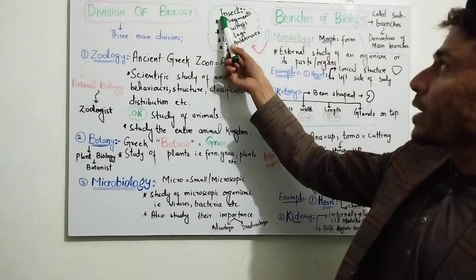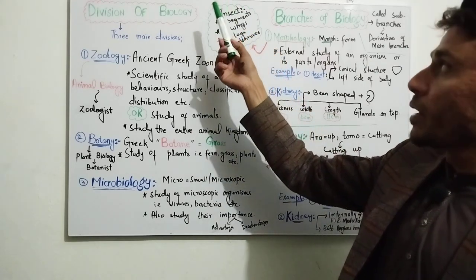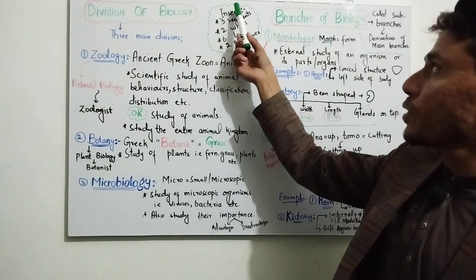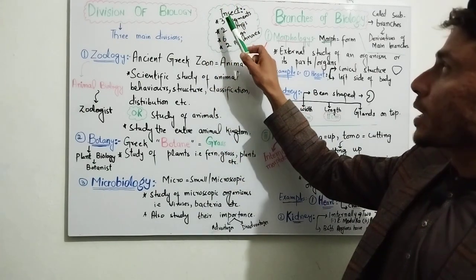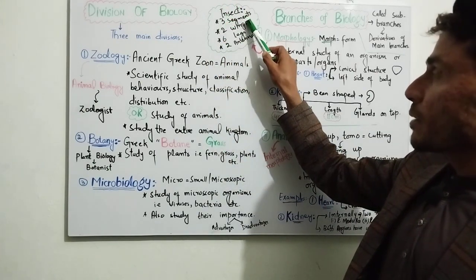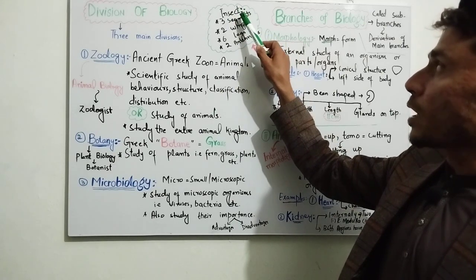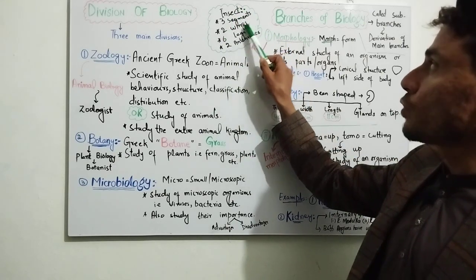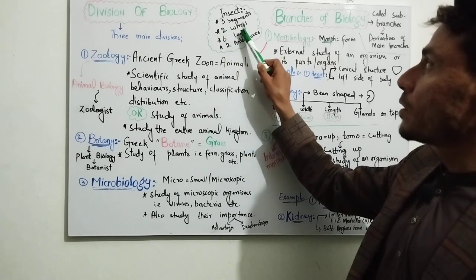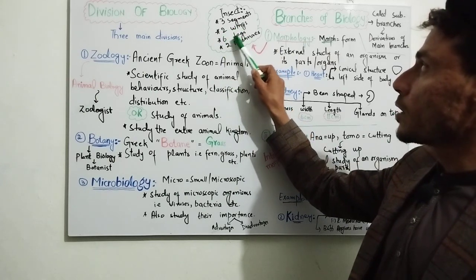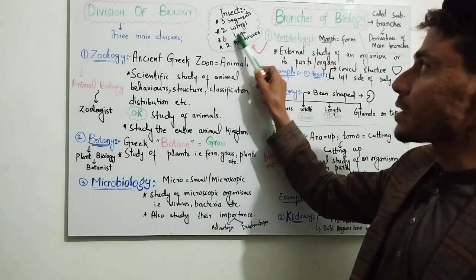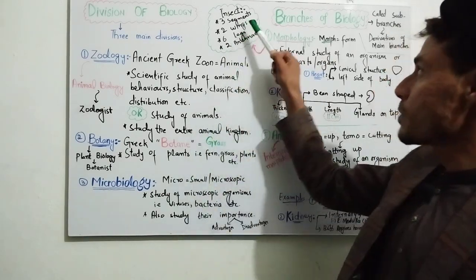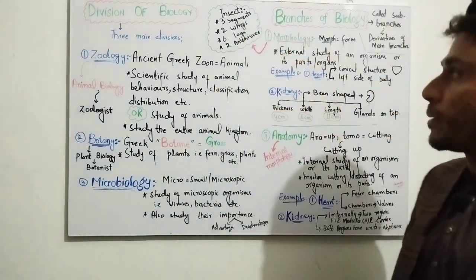For example, if you consider an insect, you study its external structure. In every insect, there are three segments: the head, thorax, and abdomen — three regions. There are two wings, six legs, and two antennae. These external features of the organism are the subject of morphology.